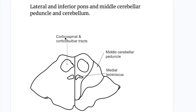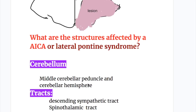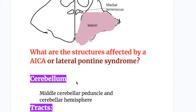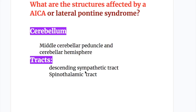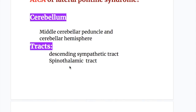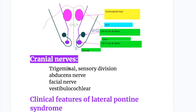Where is the lesion in anterior inferior cerebellar artery syndrome? The lesion is in the lateral and inferior pons, the middle cerebellar peduncle, and the cerebellum. The structures affected include one brain structure — the cerebellum and middle cerebellar peduncle — one descending sympathetic tract, one ascending spinothalamic tract, and four cranial nerves arising from the pons.